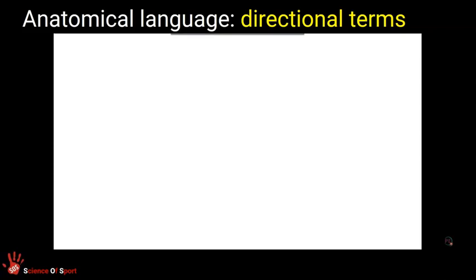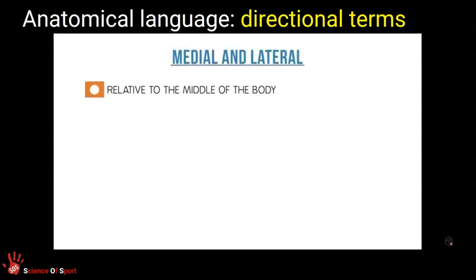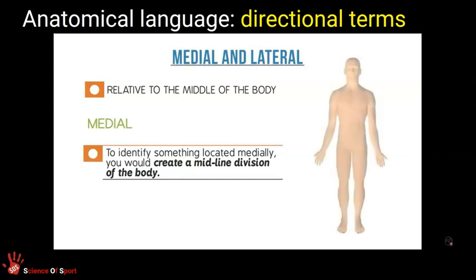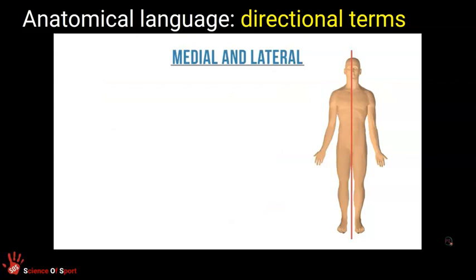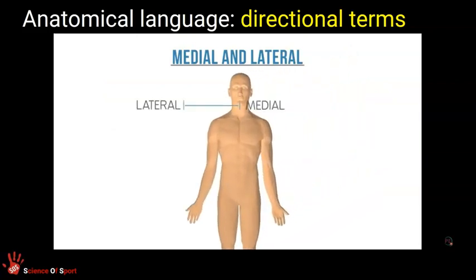If you want to describe the location of something relative to the middle of the body, you would use the term medial. To identify something located medially, you create a midline division of the body — an imaginary line that goes from top to bottom and divides your body into two equal left and right parts. The body part closer to the midline is medial; the structure farther away from the midline is referred to as lateral. For example, the bicep muscle is lateral to the pectoral muscle, and in the anatomical position, the pinky finger is medial to the thumb.